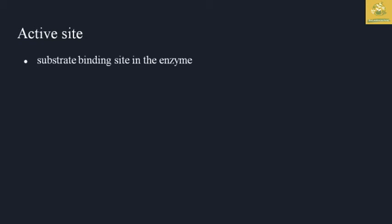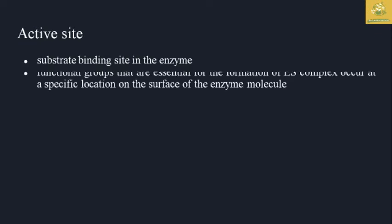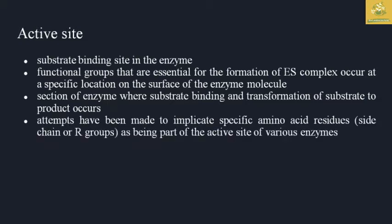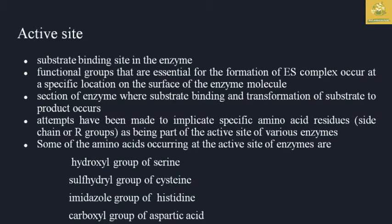After seeing enzymes and transition state, we are now going to see about the active site. The active site is where the substrate binds with the enzyme. Functional groups essential for the formation of the enzyme-substrate complex occur at a specific location on the enzyme surface. Some amino acids at the active site include: hydroxyl group of serine, sulfhydryl group of cysteine, imidazole group of histidine, and carboxyl group of aspartic acid.